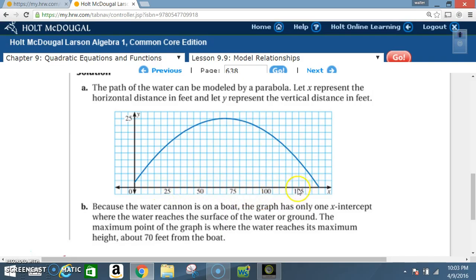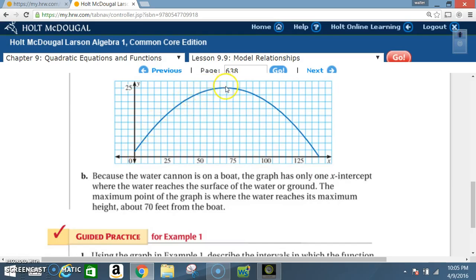Now 140 feet. Remember now here they're going by fives. So that's 125, 130, 135, 140. Because the water cannon is on a boat, the graph has only one X intercept where the water reaches the surface of the water or the ground. So this is the X intercept. Here represents the height is launched on the boat. The maximum point of the graph is where the water reaches its maximum height of about 70 feet from the boat. And all that means is here about right up and there is the maximum height at 25 feet. And that takes place at about 70 feet. So 50, or better yet 75, back one, you're at 70. That's about halfway. And right there is the peak of about 25 feet.